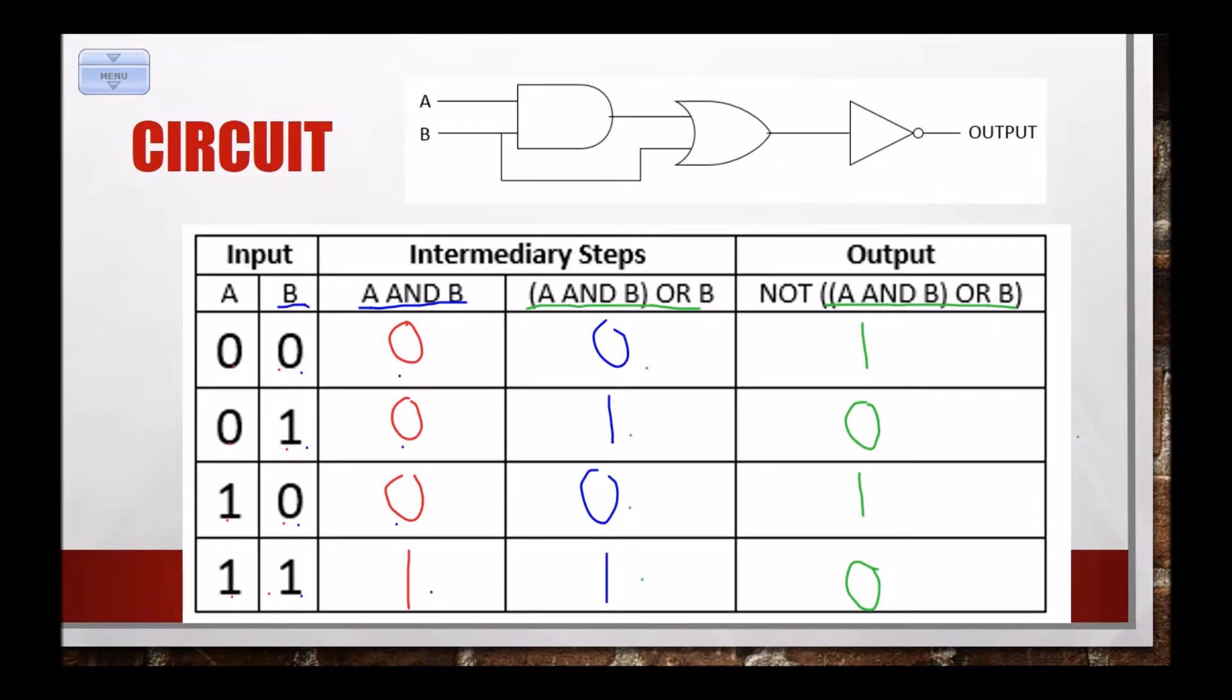If the input is zero and zero, it outputs a one. If the input is zero and one, it outputs a zero. If the input is one and zero, it outputs a one. And if the input is one and one, it outputs a zero. Okay, that's what this circuit does. Given my two inputs, the A and the B, if I know what A is, I know what B is, it does these things to it. Okay, let's look at one more.